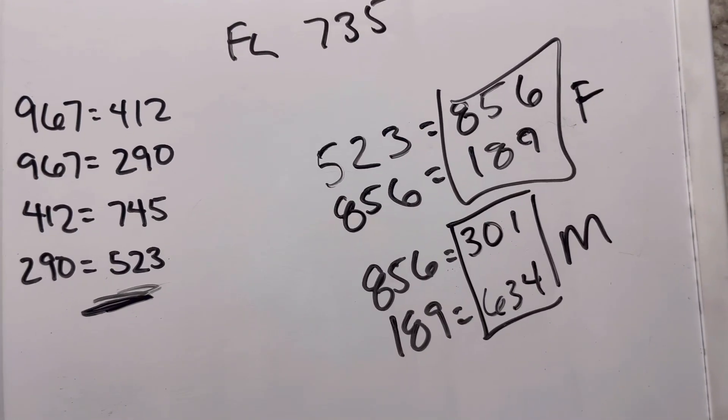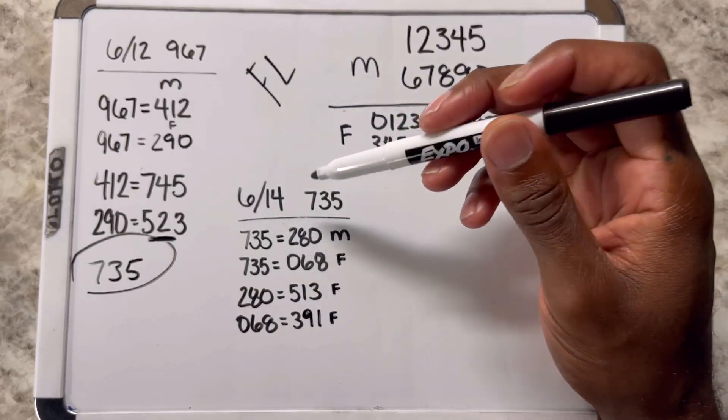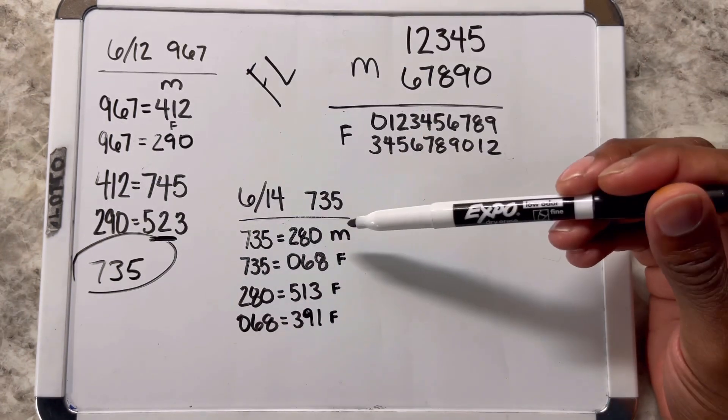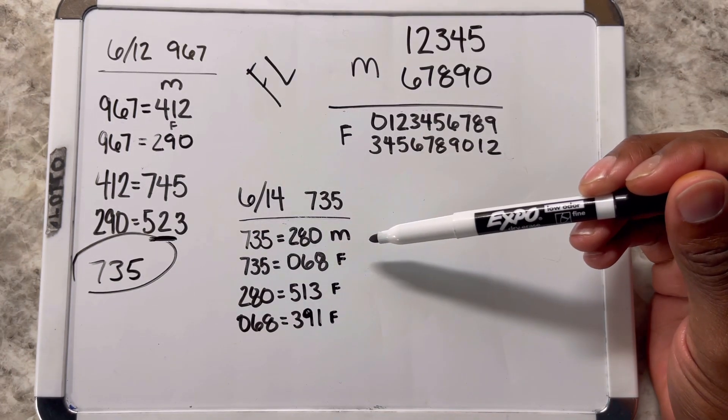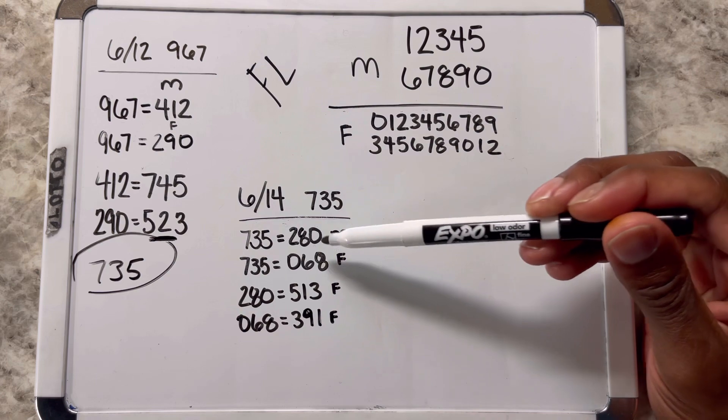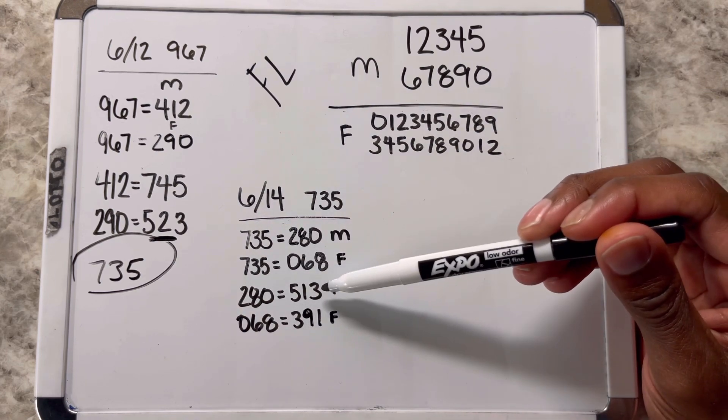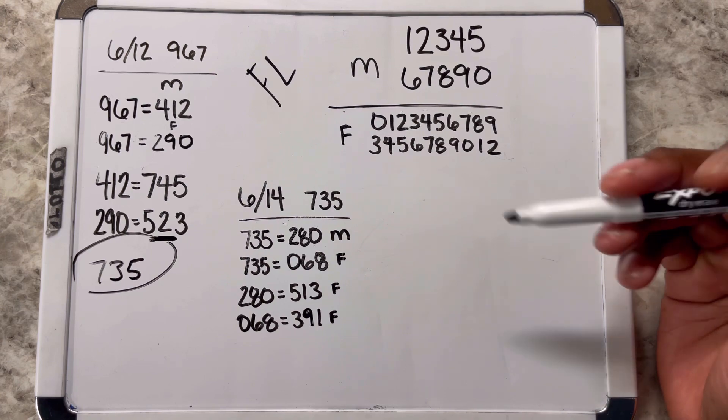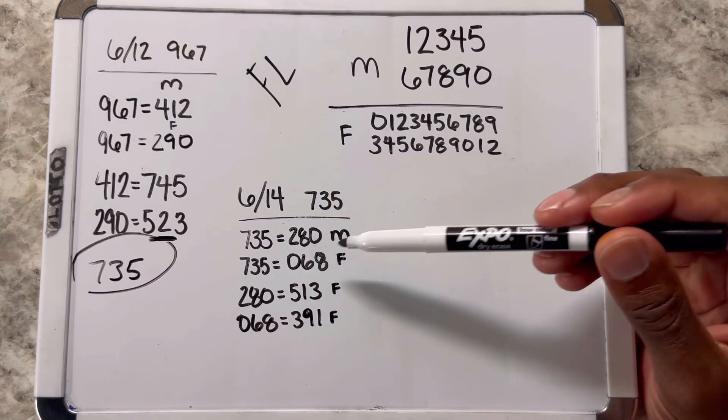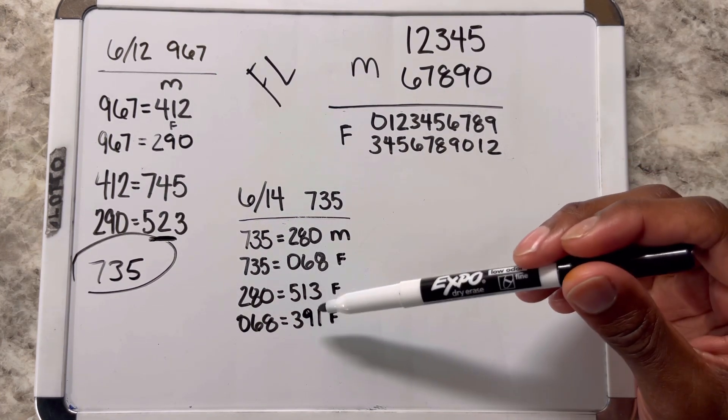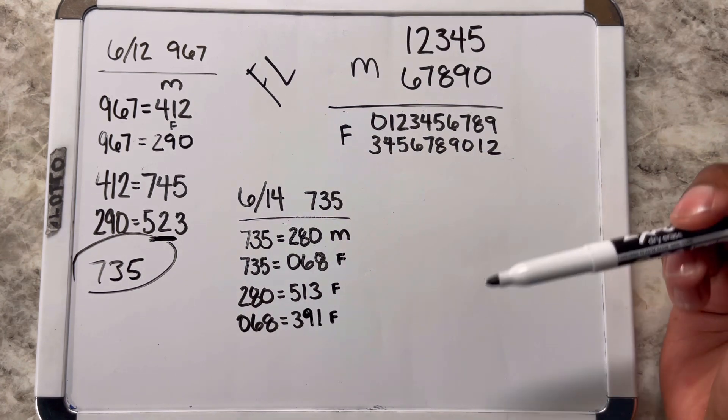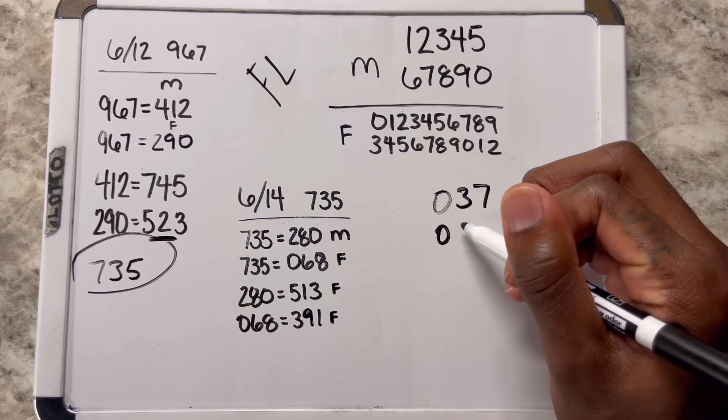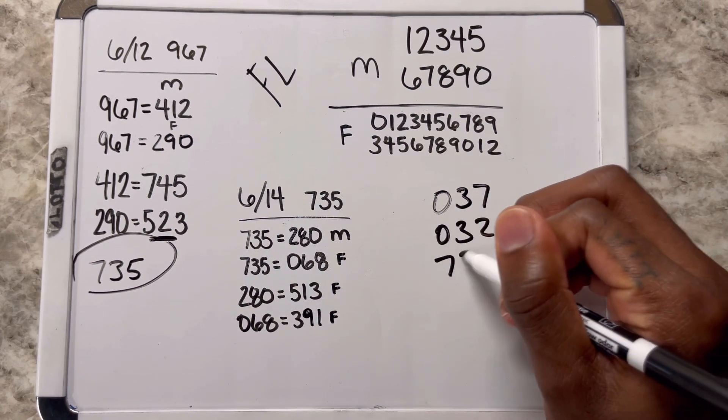All right, look y'all, try this. We took the 14th, 735 midday number, and did the same thing. We converted it into the mirror number, converted into the flip number. The numbers we came up with: 280, 068, 513, and 391. Y'all had 037 that came out, 032, and 735.